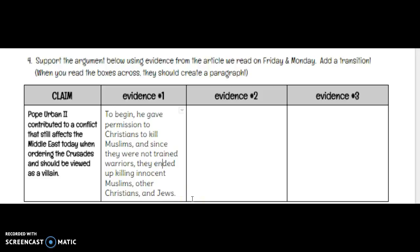We talked a little bit about how that article was biased. After this activity, you're going to do this exact same thing with a different claim. Just know that this claim is supported with arguments from the article that we've already read, and then you're going to have an opposite claim at the very end after you complete the next activity. My first example of evidence is: to begin, he gave permission to Christians to kill Muslims, and since they were not trained warriors, they ended up killing innocent Muslims, other Christians, and Jews.